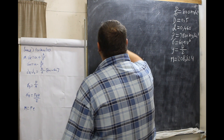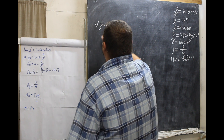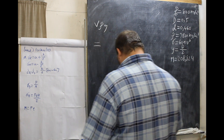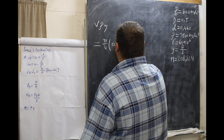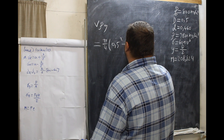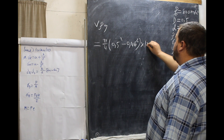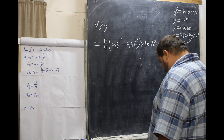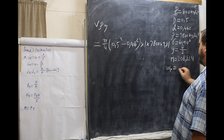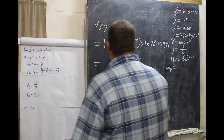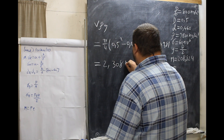We want the weight of the pipe. The weight of the pipe is V times the density times G. So this will equal pi over 4 times 0.5 squared minus 0.46 squared, times 1, times 7,800. You put this in your calculator and you get 2,308 kilonewton meters.